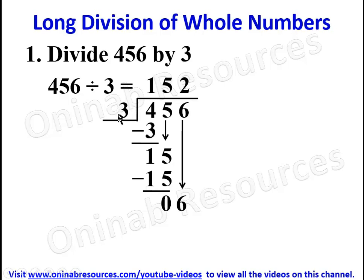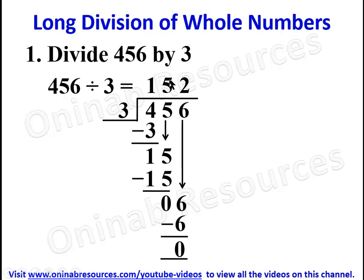We now bring down the six. Six divided by three gives two, then we multiply: two times three gives six, and six minus six gives zero. Therefore, four hundred and fifty-six divided by three gives one hundred and fifty-two. This is what we call the quotient.